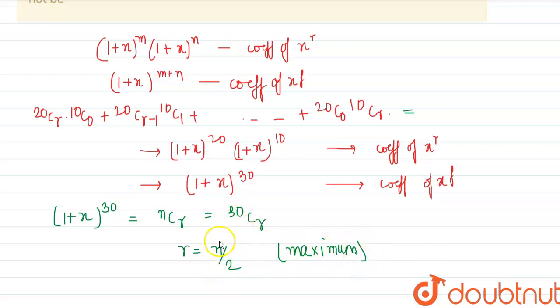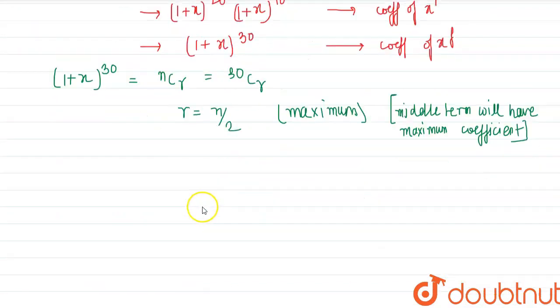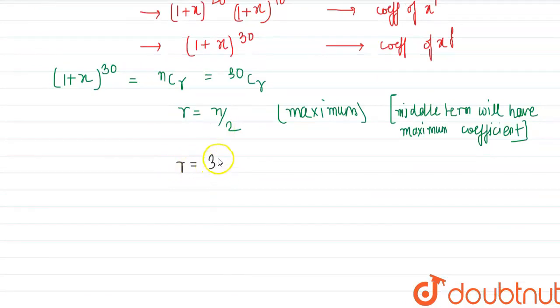So, as 30 is an even number, the maximum term will occur at n/2 which is the middle term. As the middle term will have maximum coefficient, r equals n/2, that is 30/2 equals 15.